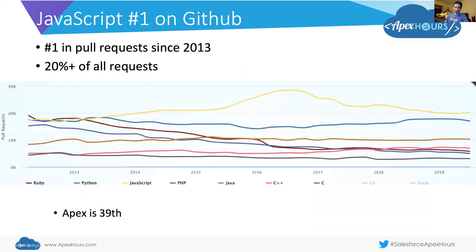And in case Stack Overflow wasn't enough proof, you see statistics like this from GitHub, where once again, since 2013, seven years in a row, the most pull requests coming to GitHub are in the form of JavaScript — 20%, in fact, of all pull requests from GitHub are for JavaScript. So JavaScript has been pretty popular for a while now. In case you're curious, Apex was 39th.